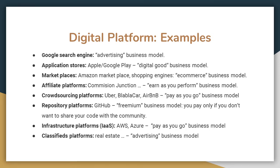Google Search Engine operates on an advertising business model. Application stores such as Apple App Store and Google Play use a digital goods business model. Marketplaces like Amazon Marketplace and other shopping engines use an e-commerce business model. Affiliate platforms like Commission Junction use an earn-as-you-perform business model.